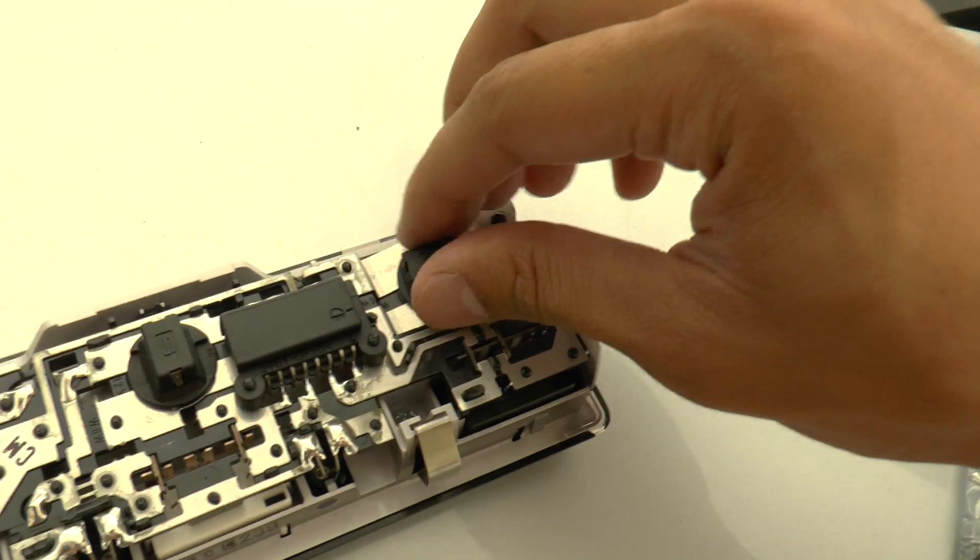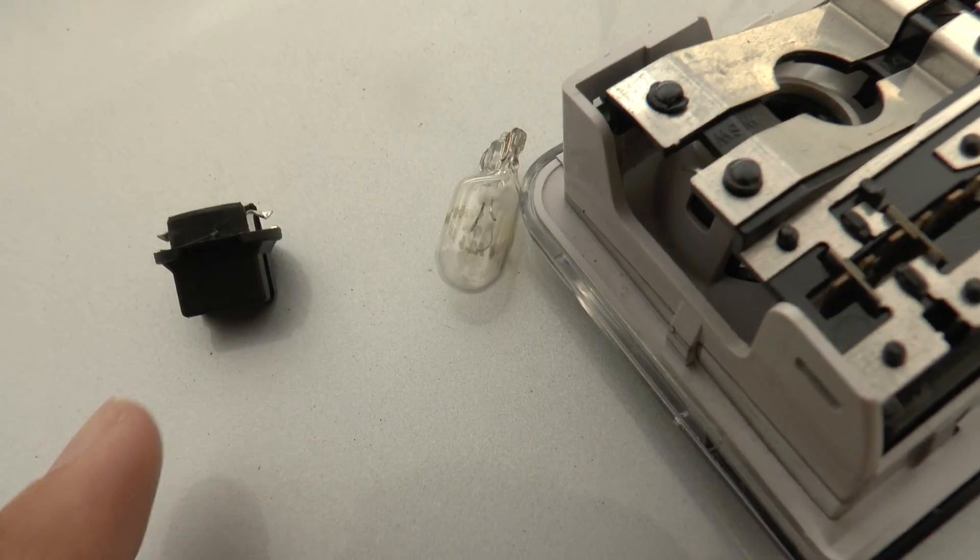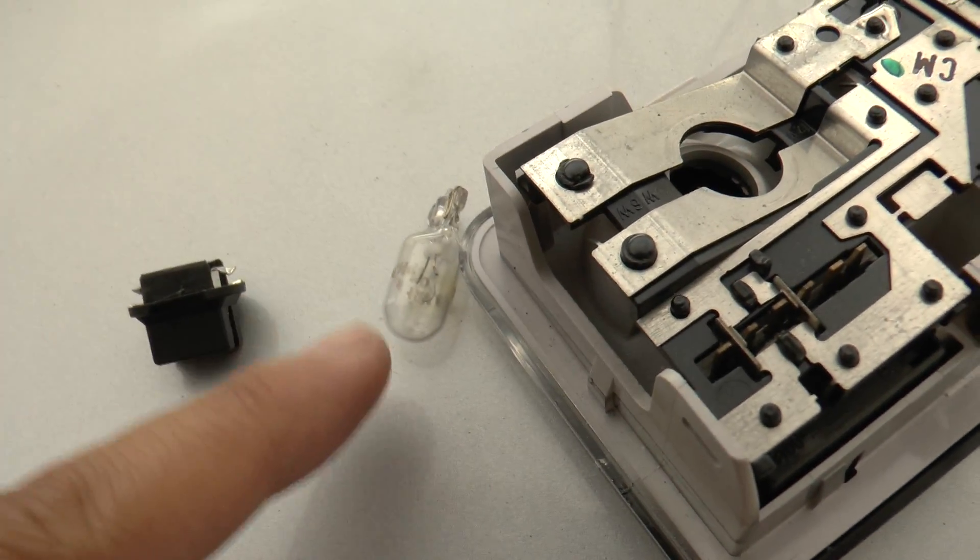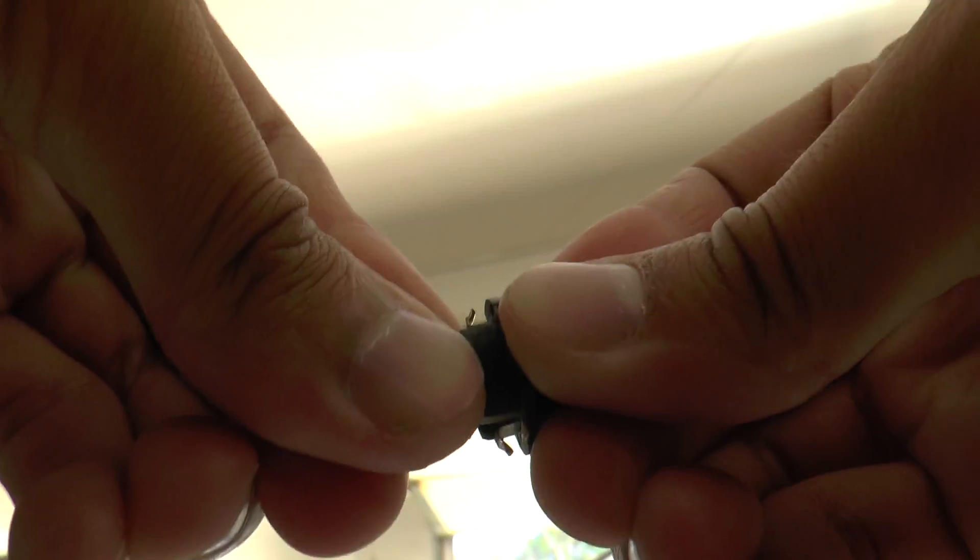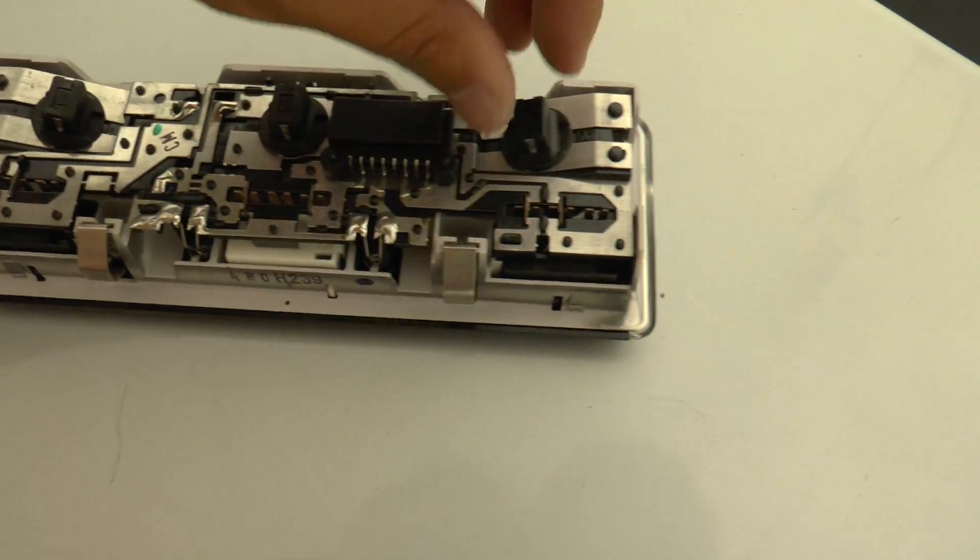Okay, there we go, and pull it out. All right, so this is the original housing for the light bulb and that's the original light bulb. To take it out, all you have to do is just pull the light bulb from the housing and that's it. Installing the dome lights are pretty easy. All you have to do is just twist the light bulb to unlock.